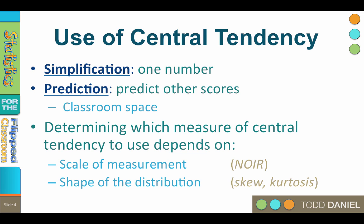Determining which measure of central tendency to use depends upon two things. First, it depends upon the scale of measurement — nominal, ordinal, interval, or ratio. For instance, the mean is typically used with interval or ratio level data. Second, our choice of a measure of central tendency depends upon the shape of the distribution. If the distribution is highly skewed or kurtotic, we may choose a specific measure of central tendency. There are three measures of central tendency that we will learn about: mean, median, and mode.